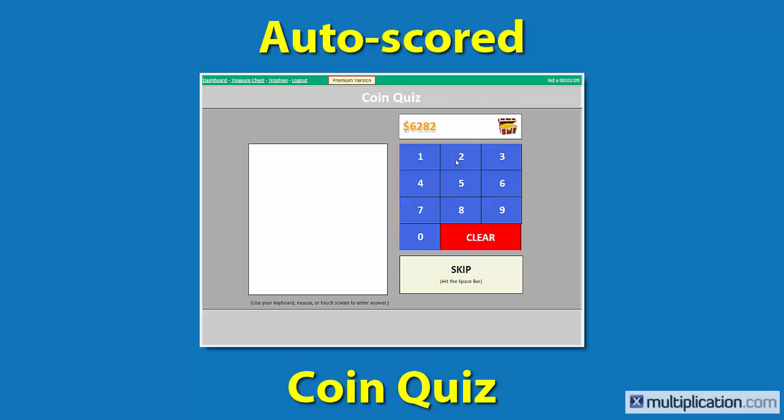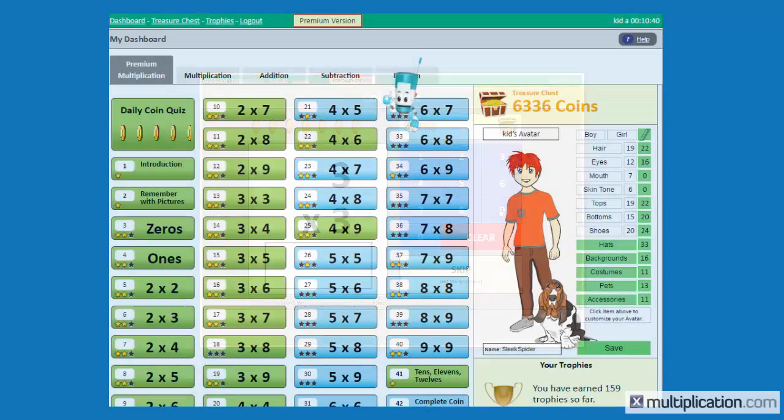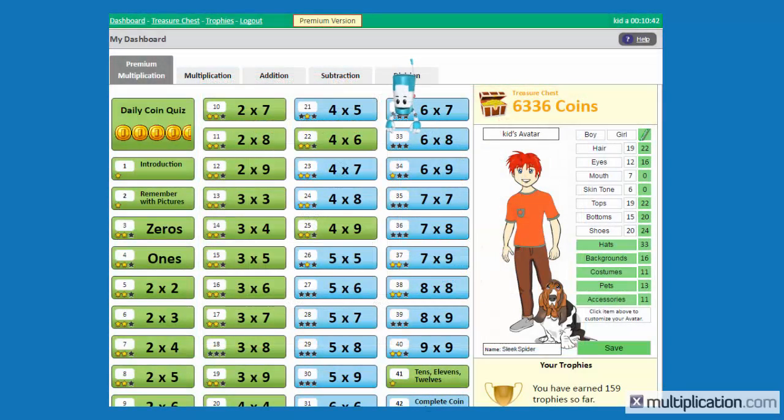Kids start off each day with a quick, automatically scored quiz to see which facts they know. After the quiz, the student dashboard shows the child, and you, which facts they know and which ones they don't.